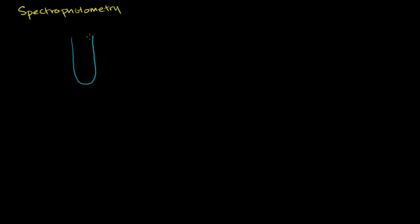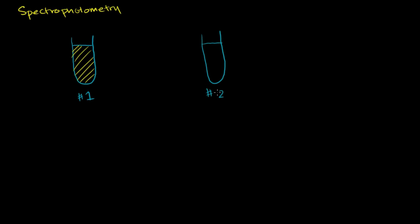Let's say we have two solutions that contain some type of solute. That is solution one, and this is solution two. Let's assume that our beakers have the same width. Solution one has less of the solute in it — let's say it's yellow, or to our eyes it looks yellow. Solution number two has more of the solute, represented as more closely packed lines. So the concentration of the solute is higher here — higher concentration — and this is a lower concentration.